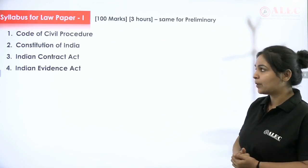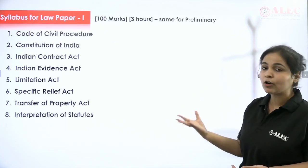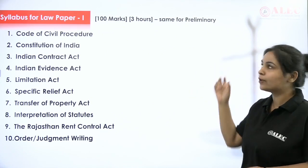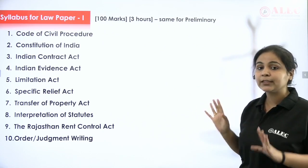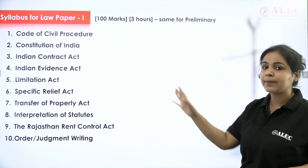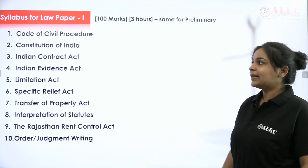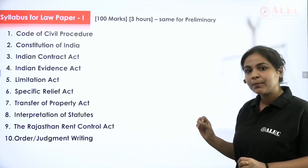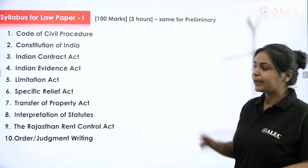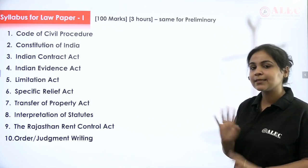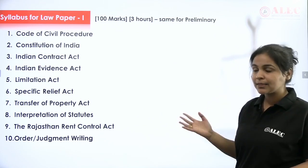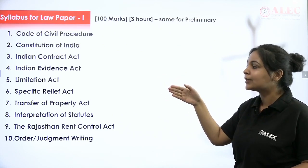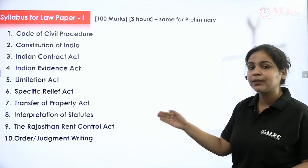First, let's go to Law Paper 1, which is our civil law paper. It is 100 marks and you will get 3 hours to write it. The syllabus for law paper 1 is the same for both the preliminary exam and main examination. The subjects are: CPC, Constitution, Contract, Evidence, Limitation, Specific Relief, Transfer of Property, and Interpretation of Statutes.